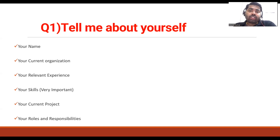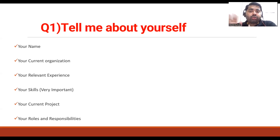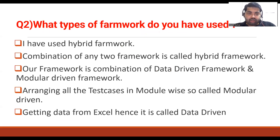For example, if you have a total of six years of experience, highlight how many years you have worked in automation, API testing, manual testing, and mobile testing. Also highlight your skill set, which project you are working on, your domain, which framework you are using, and your roles and responsibilities.